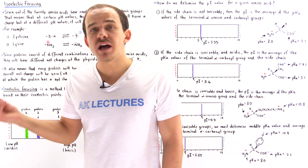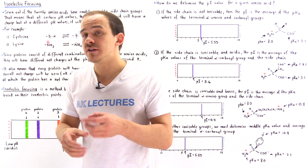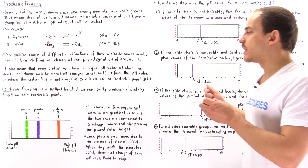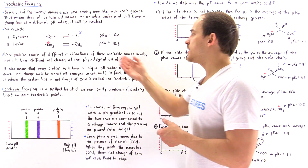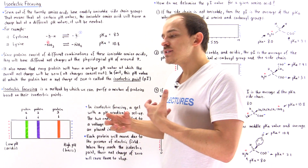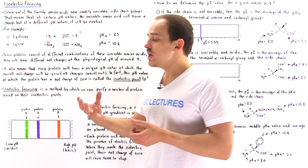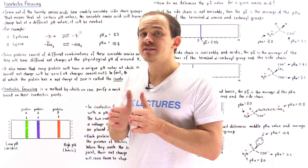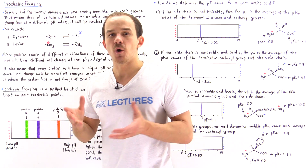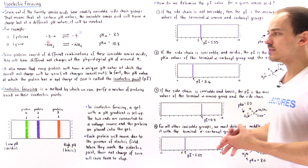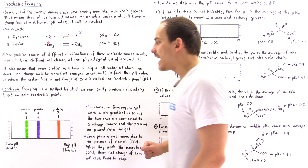Every protein contains an isoelectric point. Some proteins, if they consist of the same exact combination of ionizable amino acids, will have the same pI. But usually proteins have different isoelectric point values because they have different combinations of ionizable amino acids. Because pI is a property unique to most proteins, we can use it to purify proteins. If we have a mixture of different proteins, we can separate and isolate specific ones using a method known as isoelectric focusing.